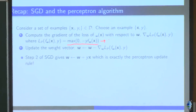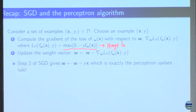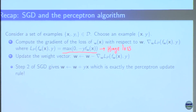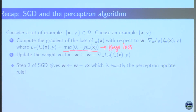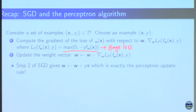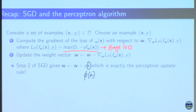The hinge loss is the max of some signed distance — which is supposed to be unsigned but turns out to be signed — and 0. This is nothing but the perceptron update rule: phi(x) times y, when added to w, gives you the perceptron update rule.